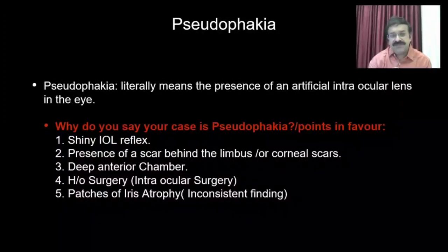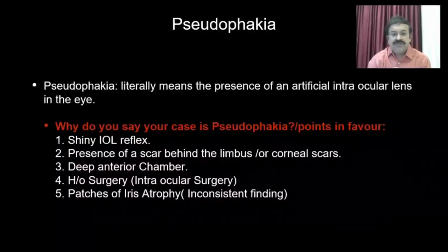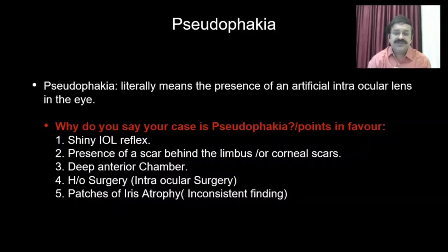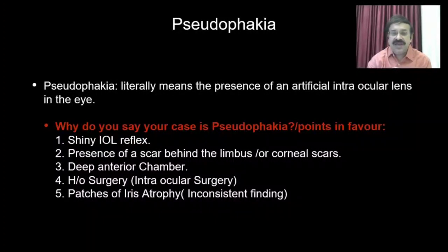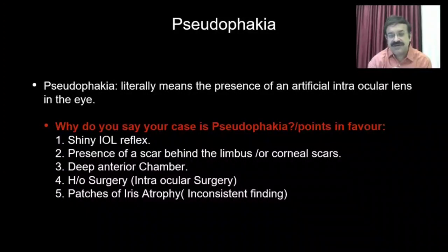Pseudophakia literally means the presence of an artificial intraocular lens in the eye. This is one question you will definitely be asked if given a case of pseudophakia — or you might be asked: what are the points in favor of your diagnosis? First and foremost is the shiny IOL reflex. Second is the presence of a scar in the limbus, sclera, or cornea.